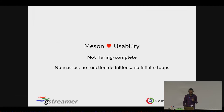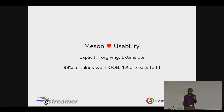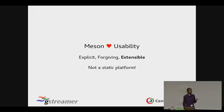Meson is also explicit and forgiving. For instance, if you have a keyword argument which takes a list of arguments and you give it a single argument, it will happily take it. It's extensible — if the default provided functions don't do what you want, there is generator support. You can have an arbitrary generator which takes a command, input, and output and it'll generate it for you. When we used it in GStreamer, we haven't had any problems with something being missing. Meson is not a platform you have to assume is going to stay static — if you have something useful to others, add it to Meson.